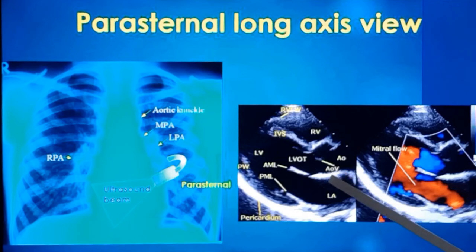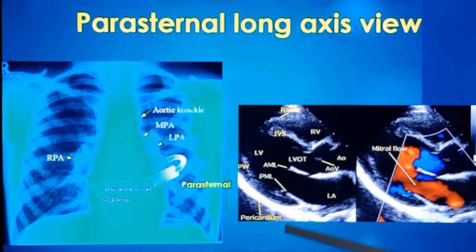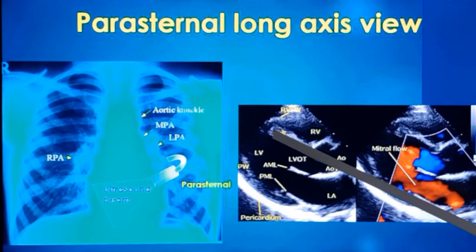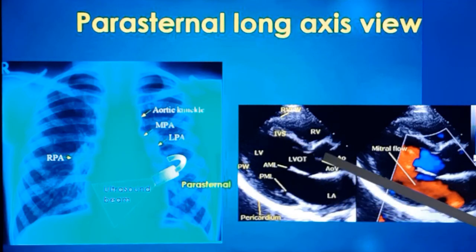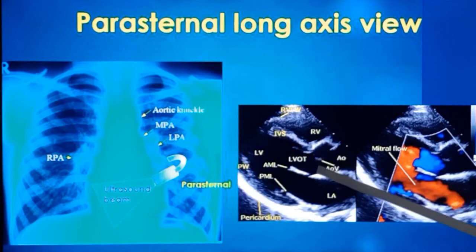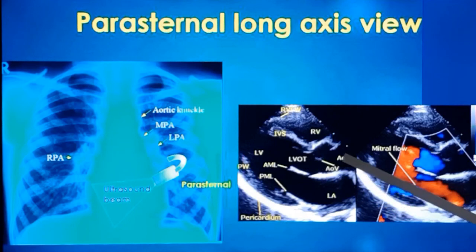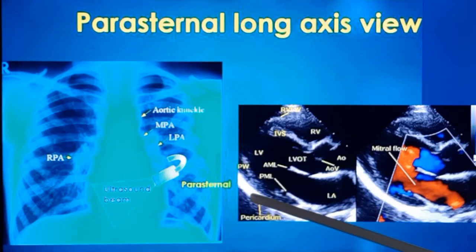In the standard parasternal long axis view, these are the structures you can see. This is the region of the transducer which sends the ultrasound beam — it is a sector image. You have the right ventricular free wall at the anterior region, the right ventricular cavity, and the outflow region. In this view you can see the interventricular septum, aorta, the closed position of the aortic valve, left atrium, anterior mitral leaflet, and posterior mitral leaflet — they are widely separated because the mitral valve is normal and fully open in diastole. This is the left ventricular outflow tract into the aorta, the left ventricular cavity, and the posterior wall of the left ventricle.